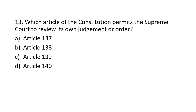The next question is: which article of the Constitution permits the Supreme Court to review its own judgment or order? Article 137 permits the Supreme Court to review its own judgment and order.